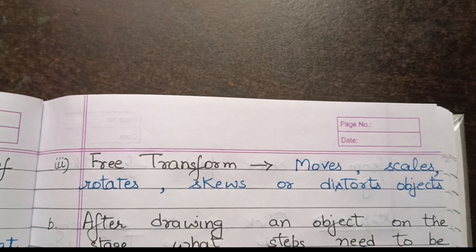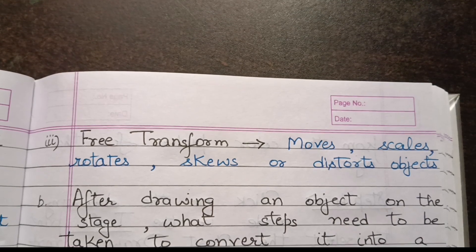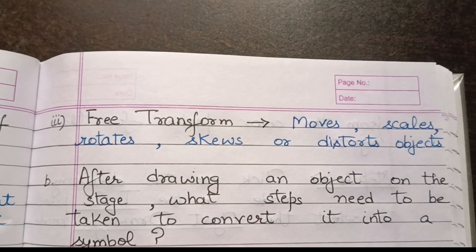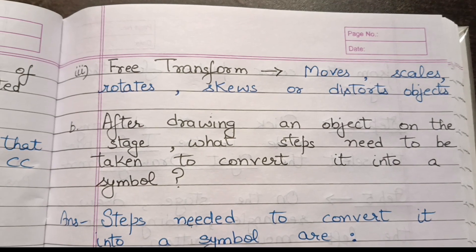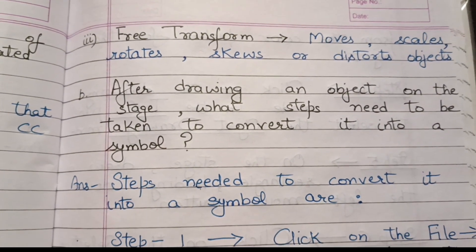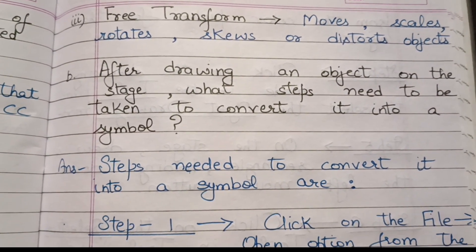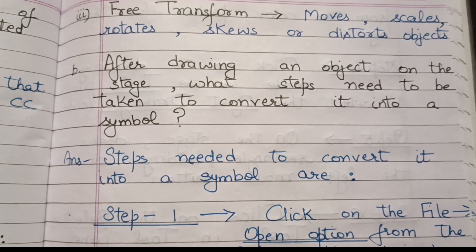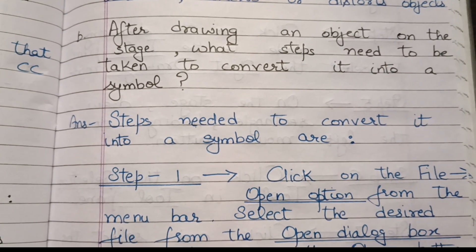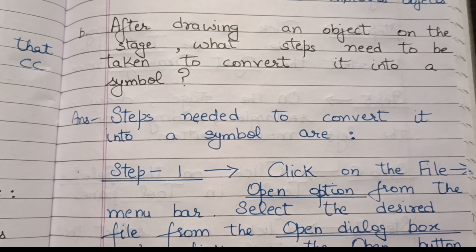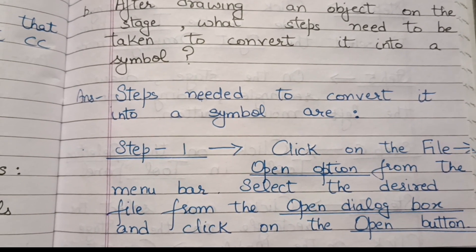Next question: After drawing an object on the stage, what steps need to be taken to convert it into a symbol? Step 1: Click on File — this will open the option. From the menu bar, select the desired file from the Open dialog box and click on the Open button.